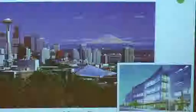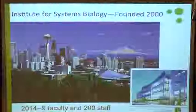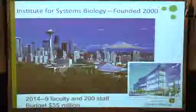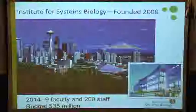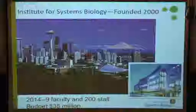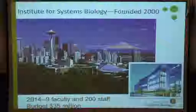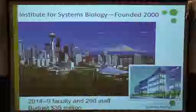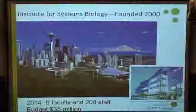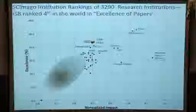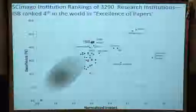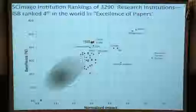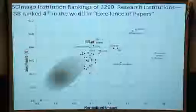As Sanjay mentioned, I'm from the Institute for Systems Biology. In case people aren't familiar with the institute, I'll give a brief introduction. We are in Seattle, in the northwest corner of the United States. This was an institute founded in 2000 by Lee Hood, Alan Adiram, and Rudy Ebersold. It's been in existence for about 15 years, and we currently have nine faculty, about 200 staff, and run on an operating research budget of about $35 million a year. A recent analysis by an independent institute in Spain ranked ISB fourth out of 3,200 research institutes in terms of excellence of papers over the past decade.